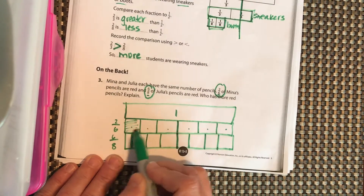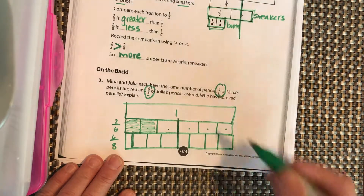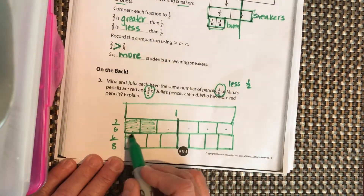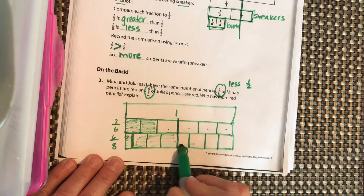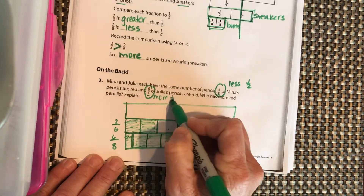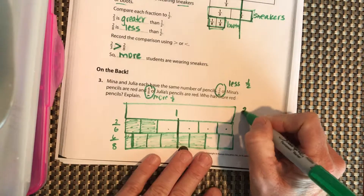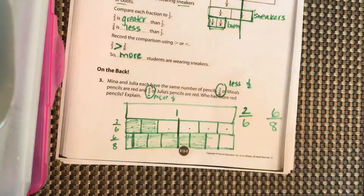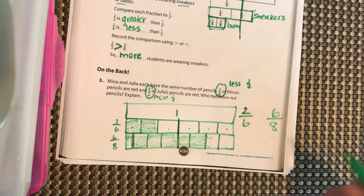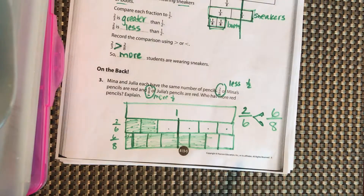So we have 2 sixths, and 2 sixths is definitely less than 1 half. And we have 6 eighths — one, two, three, four, five, six — 6 eighths is more than 1 half. So which one is bigger: 6 eighths or 2 sixths? Fill that in with a greater than, less than, or equal sign. It should be pointing to the smaller number — your little alligator mouth, chop chop, is going to eat the bigger number. Great job.